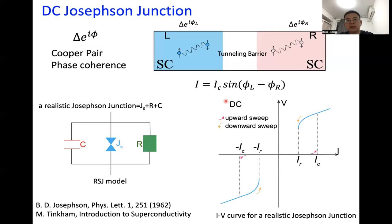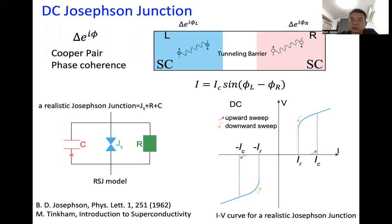In a realistic system, a realistic Josephson junction is modeled as an ideal Josephson junction connected in parallel with a resistance and capacitors. Due to this structure, if you measure the IV curve of a realistic Josephson junction, you find some hysteresis. For example, applying a current in the positive direction, after exceeding the critical current IC, the system develops a finite voltage. But during the downsweep, the system does not immediately return to the superconducting state due to charge stored in the capacitance that needs to dissipate.